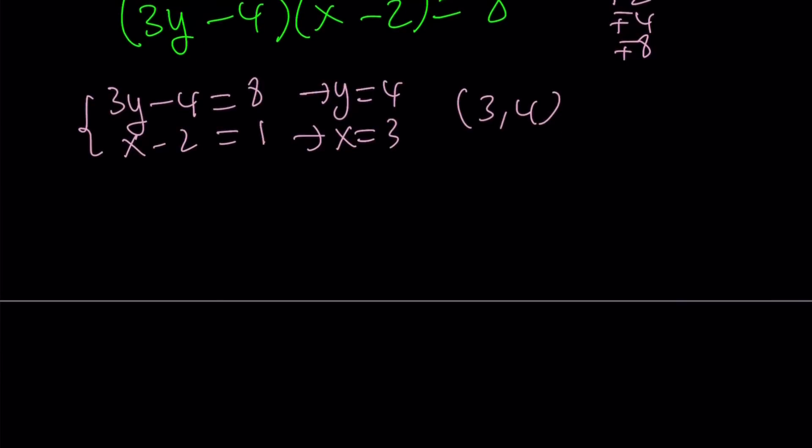But the problem with that is 3y minus 4, if you set it to 4, then from here y is not going to be an integer. So we don't have to consider that case, even though x is going to be an integer. This is going to be y equals 8 thirds and we don't want that. So we're going to skip those cases.